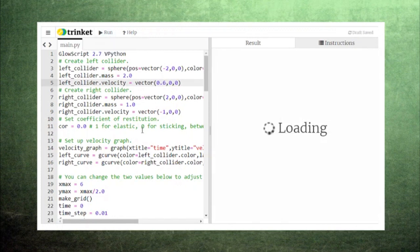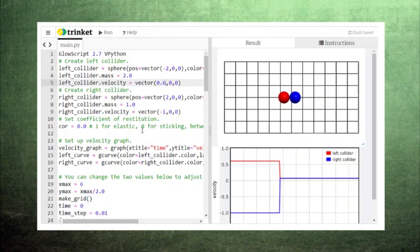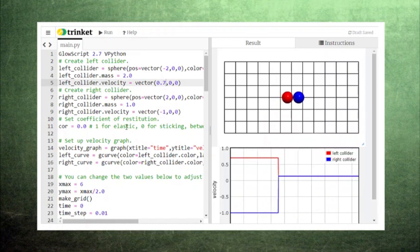But if we give a little increase to one of the velocities, we can see the two colliders stick together and move at the same velocity after the collision. No matter what combination of mass and velocities we provide, a coefficient of zero always results in the two colliders sticking together.